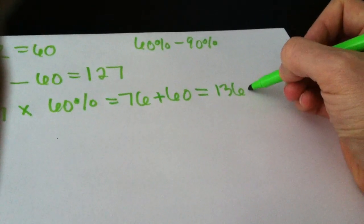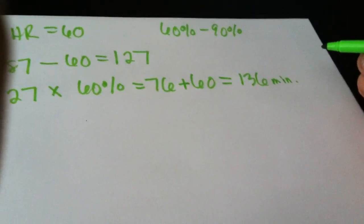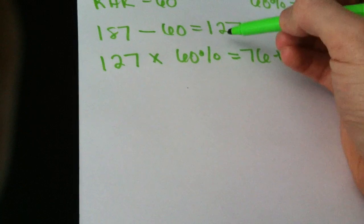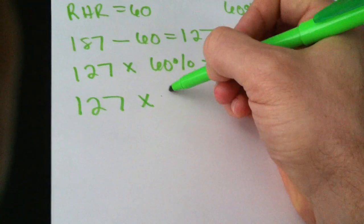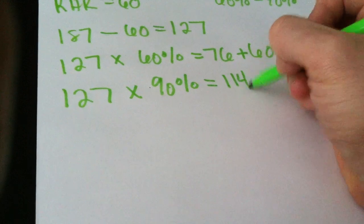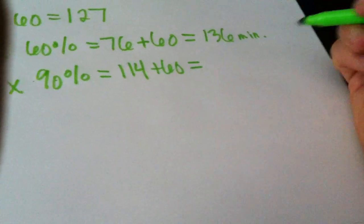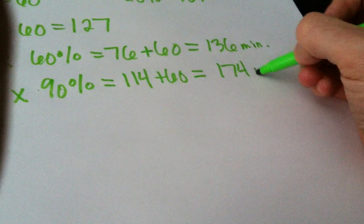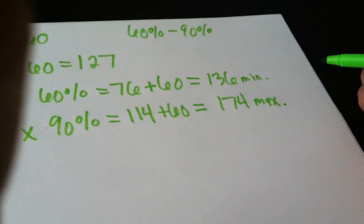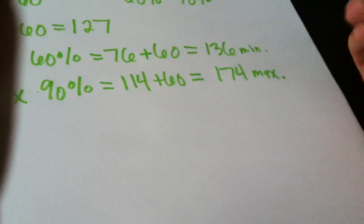So now this is going to be the low end of my range. So this would be the minimum, where before it was 112 when we just used the age. Okay, so now we need to find the high end of the range. So we're going to take this 127 again, and we're going to multiply that by the 90%. And that equals 114. And we're going to add back in that 60 for our resting heart rate. And that is going to be 174. So now that is the max end of my range. So my range before was 112 to 168. And now my range is 136 to 174 when I take into account my resting heart rate.